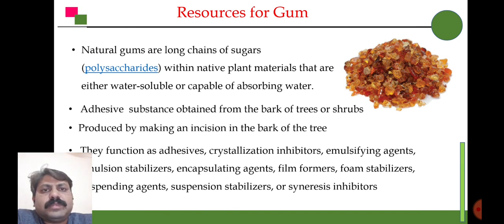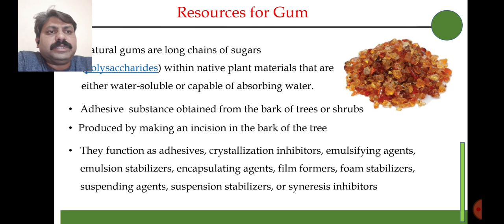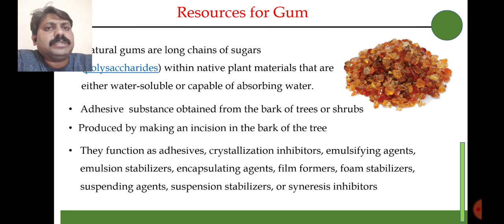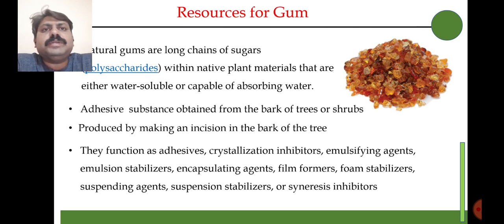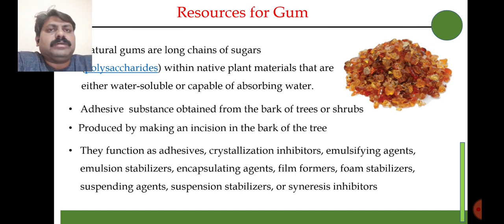Gum is one more important constituent of our lives. The chemical composition of gum is polysaccharide — that is carbohydrate — and it is available in plant species. Gum has adhesive property and can be extracted from the bark of trees. Gum is used for several applications: as an adhesive, as a crystallization inhibitor, as an emulsifying agent, as a stabilizer, as an encapsulating agent — the coating of capsules in medicines is made with the help of gum — as a film former, foam stabilizer, and suspending agent.